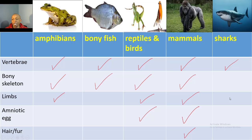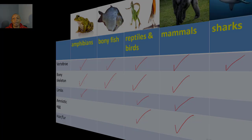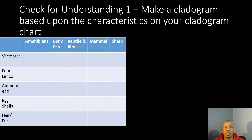Bony fish and sharks do not have limbs, so we don't see them with feet or arms. Then the amniotic egg — this means they have a protective outer layer on their egg. The only organisms that have that protective layer are reptiles, birds, and mammals. And lastly, hair or fur — the only organism on here that has hair or fur is the mammal. The other organisms do not.